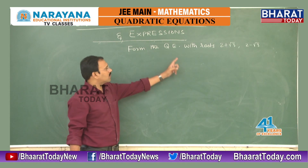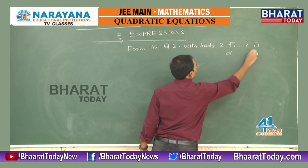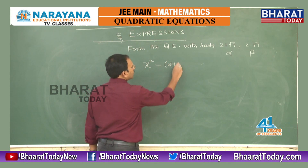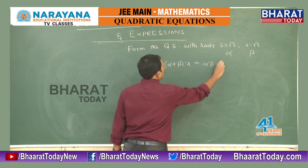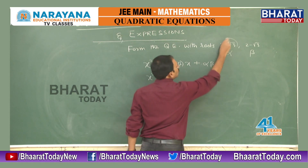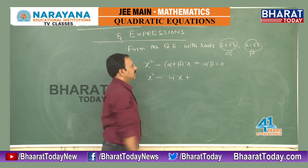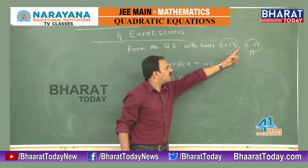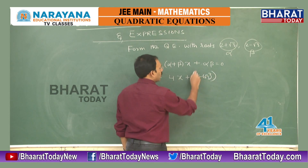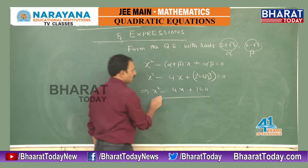Another example: form the quadratic equation with roots 2 + √3 and 2 - √3. Using the formula x² - (sum of roots)x + (product of roots) = 0. Sum = (2 + √3) + (2 - √3) = 4. Product = (2 + √3)(2 - √3) = 4 - 3 = 1. So the equation is x² - 4x + 1 = 0.